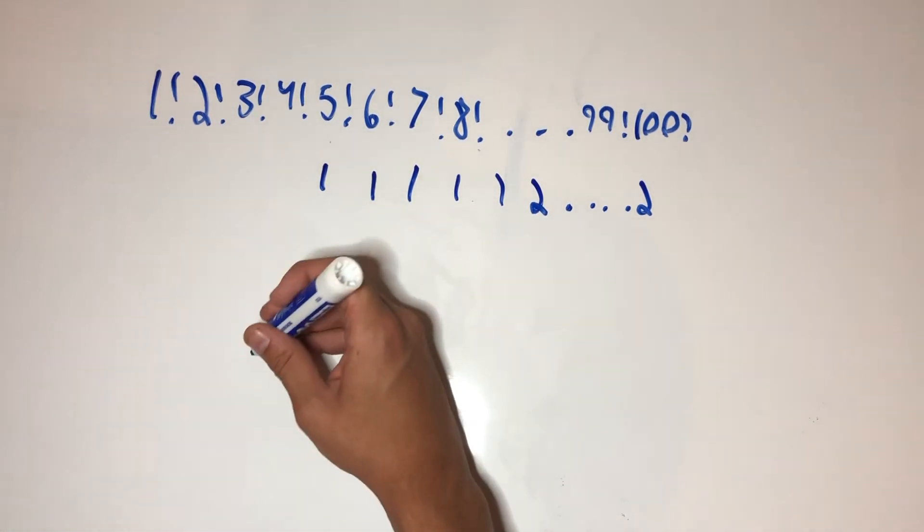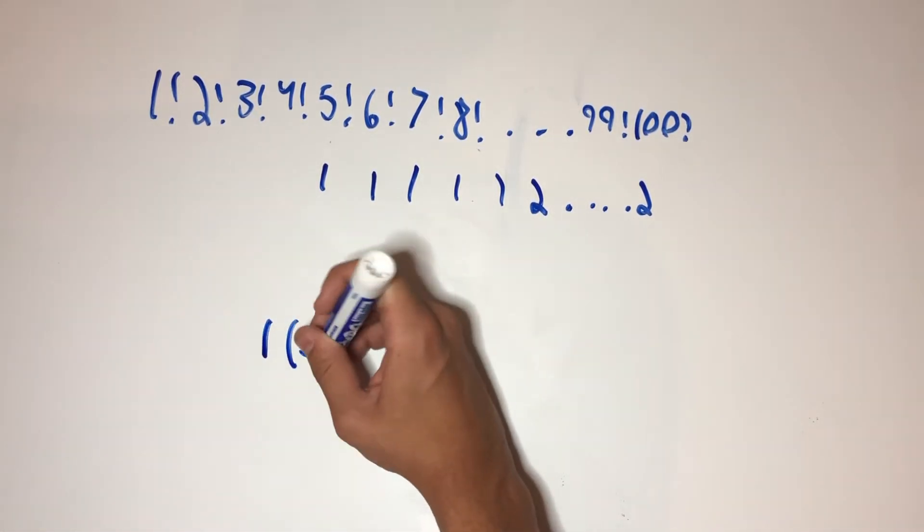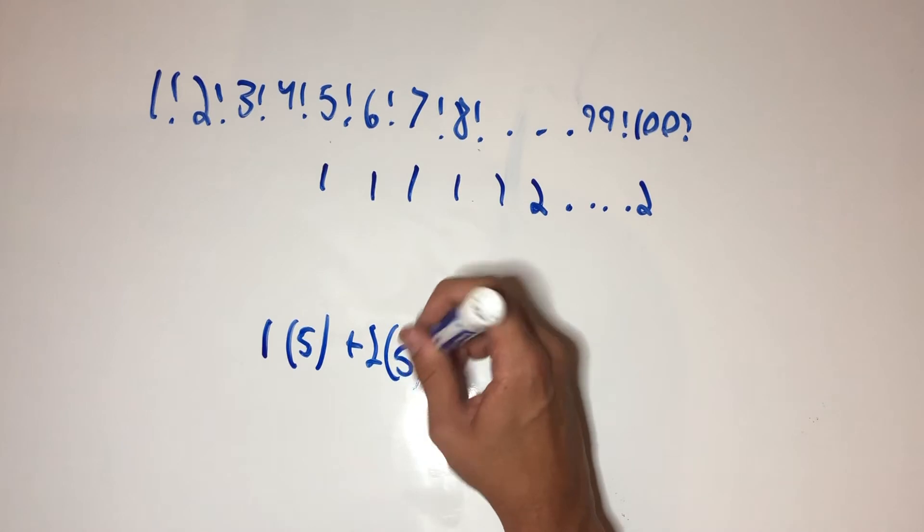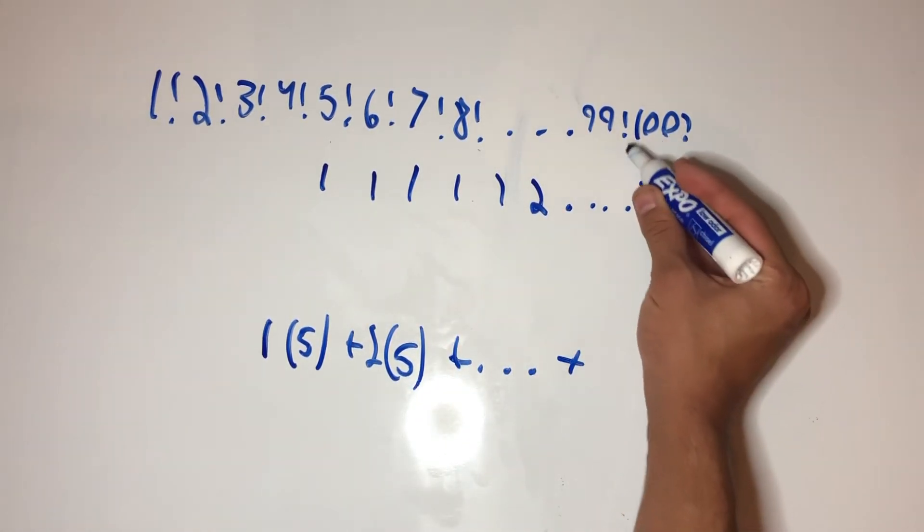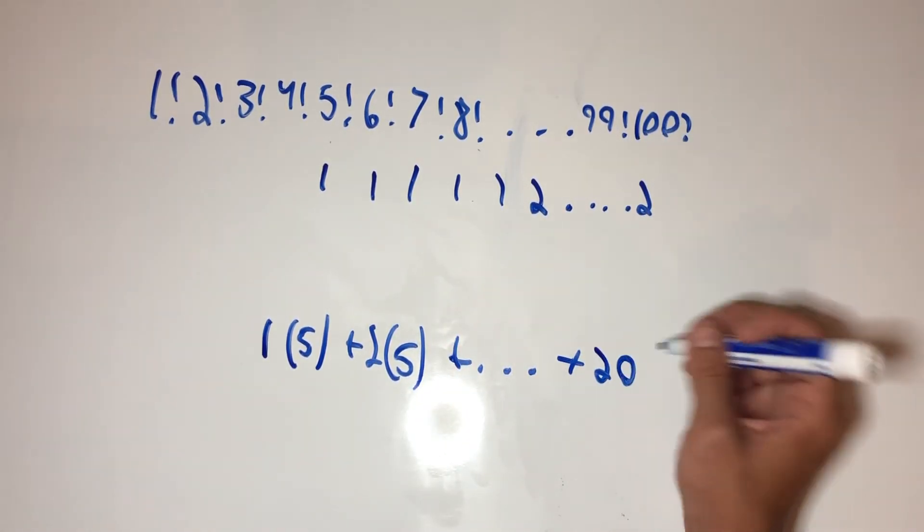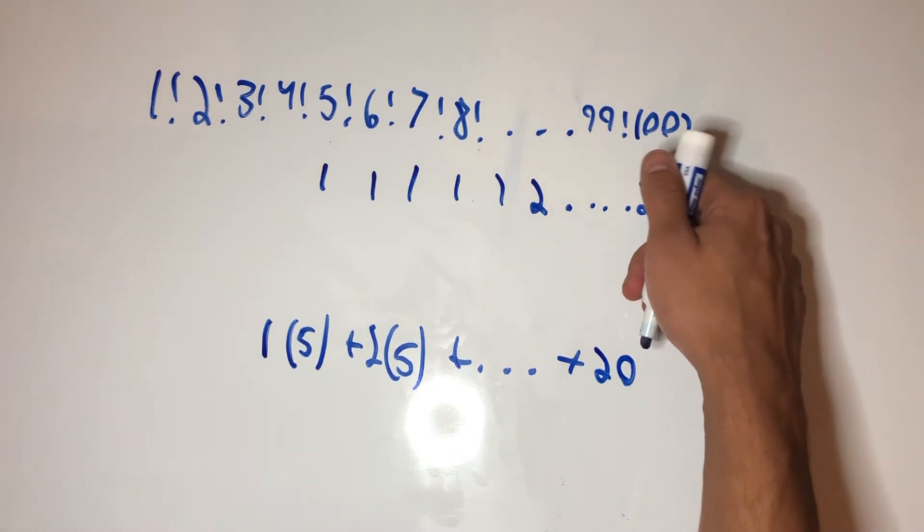So, we end up having 1 times 5, plus 2 times 5, plus so on, plus, and 100 will have 20 factors of 5, but there's only going to be one of those.